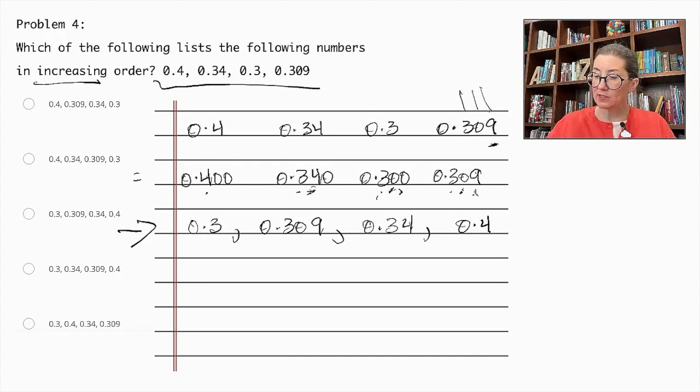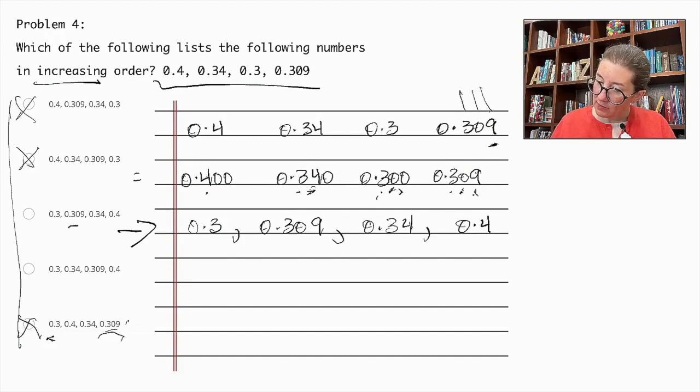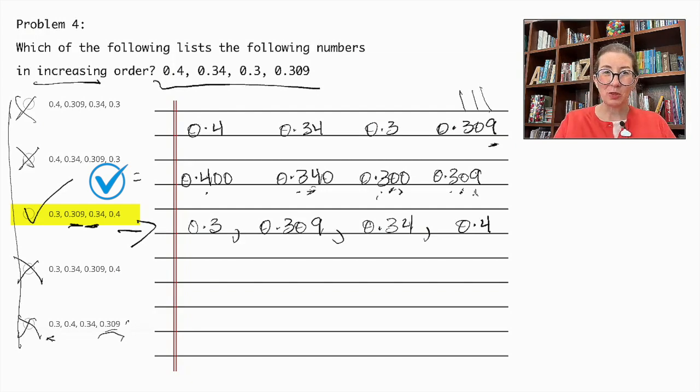So let's look at our options and find which one matches. This one has 0.4 as the first number, so that can't be right. The remaining have 0.3 as the first number. This one has 0.309 as the last number. So that can't be correct. So let's look at these ones more closely. 0.309 and 0.34. So this one is the correct order from lowest to highest.